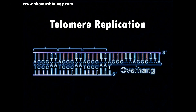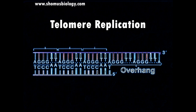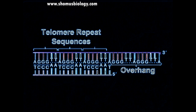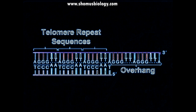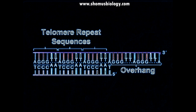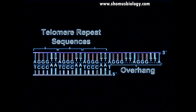The ends of chromosomes contain regions referred to as telomeres. These telomeric regions consist of telomeric repeat sequences. The exact sequence of the telomeric repeat can vary from species to species. The repeat sequence shown here is found in the telomeres of human chromosomes.